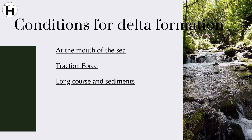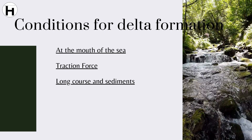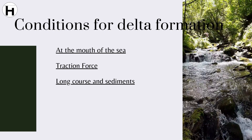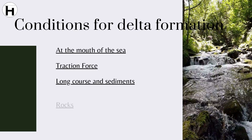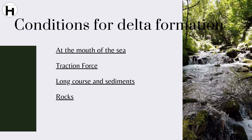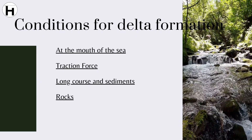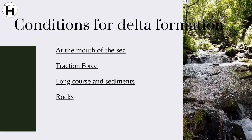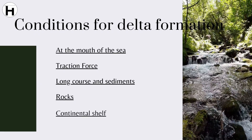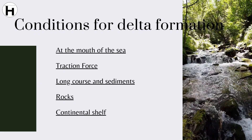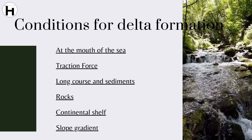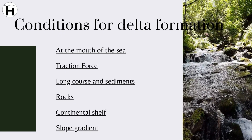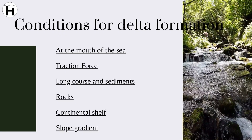Also, the length of the river is directly proportional to the size of the delta. The nature of rocks in the catchment area matters — the harder the rocks, the lesser will be the sediments. An extensive continental shelf and gentle slope gradient with rolling lands is a prerequisite.